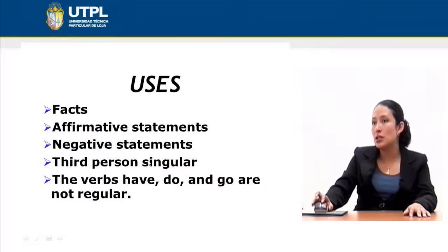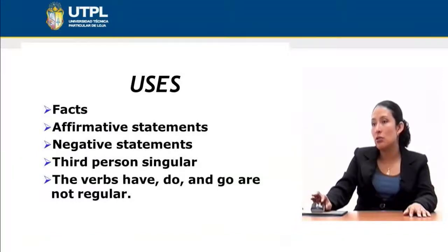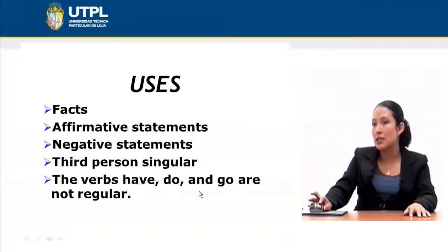Regarding uses, the present tense is used for facts, affirmative statements, negative statements, and third person singular as just explained. The verbs have, do, and go are irregular, which means you don't simply add an S. For example, 'haves' is not correct — the third person form of 'have' is 'has', and similarly 'do' becomes 'does' and 'go' becomes 'goes'. These verbs are irregular and are not used in the regular way.